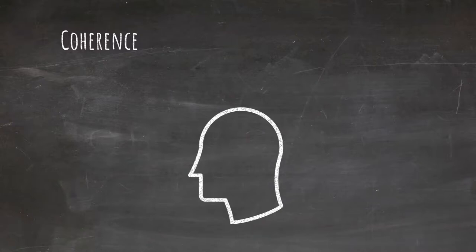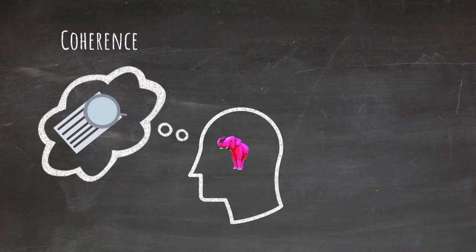What our brain also does is two more things. First, coherence. We're trying to make sense of the world around us and even find coherent stories, for example, for our mental image of a pink elephant.